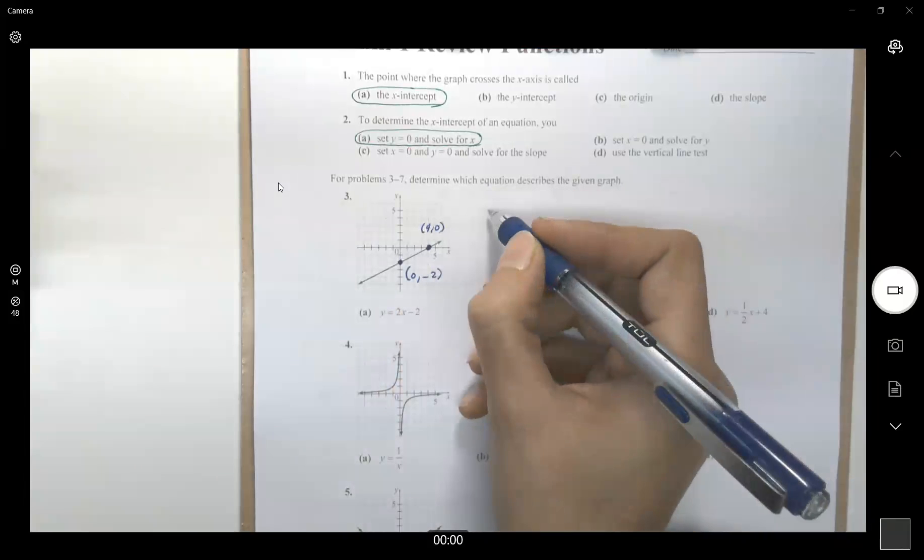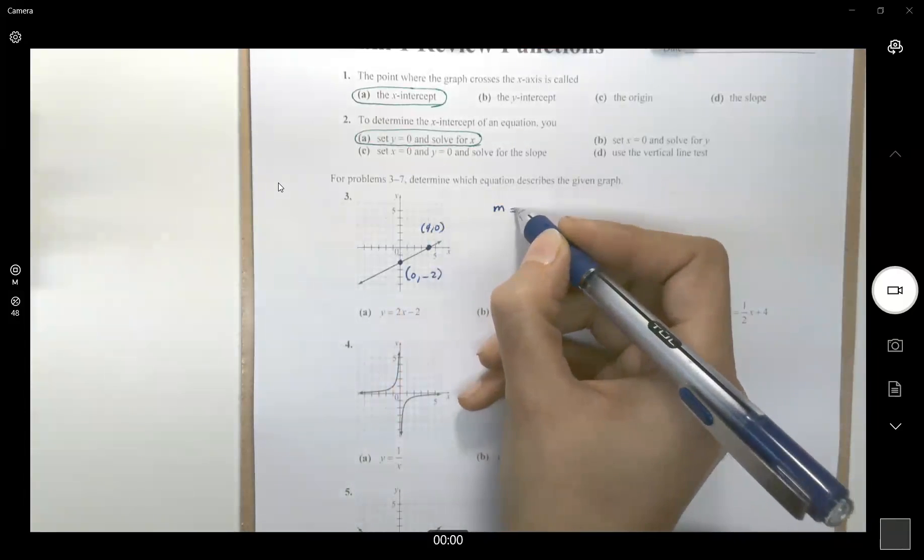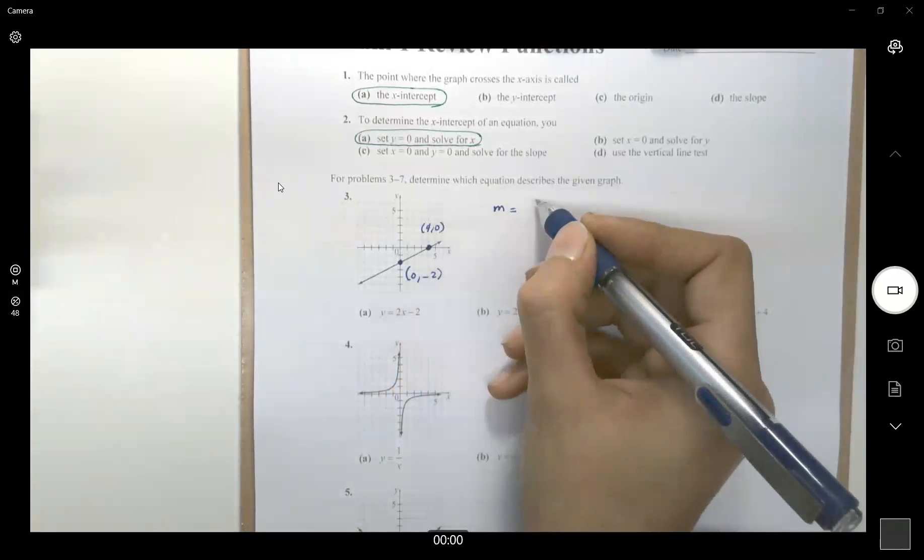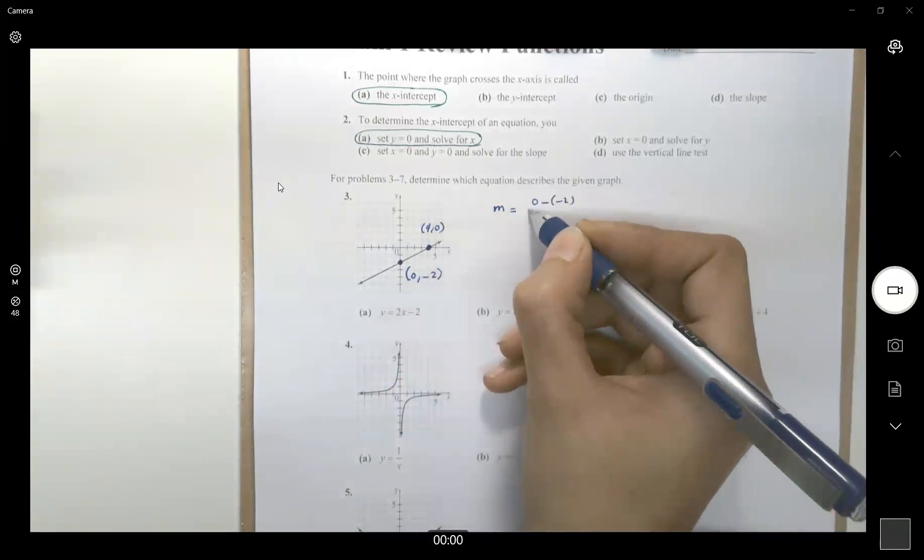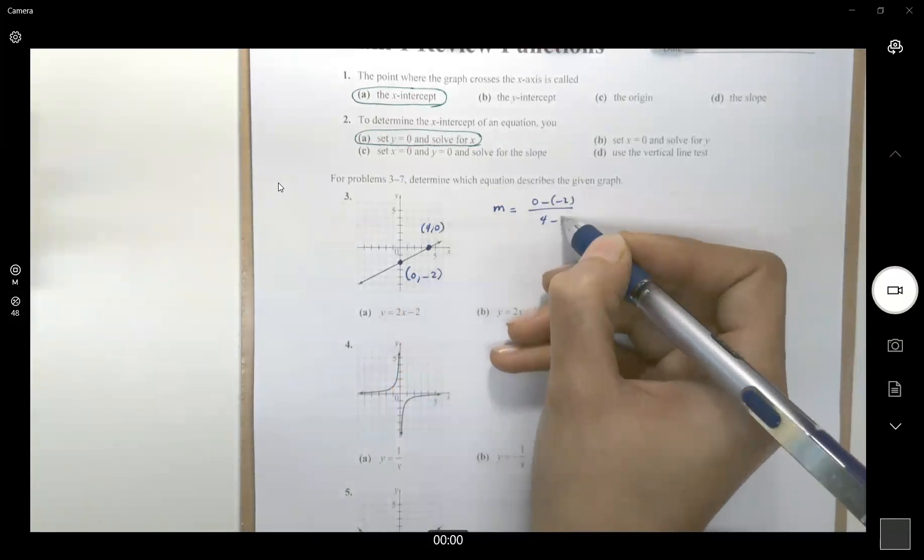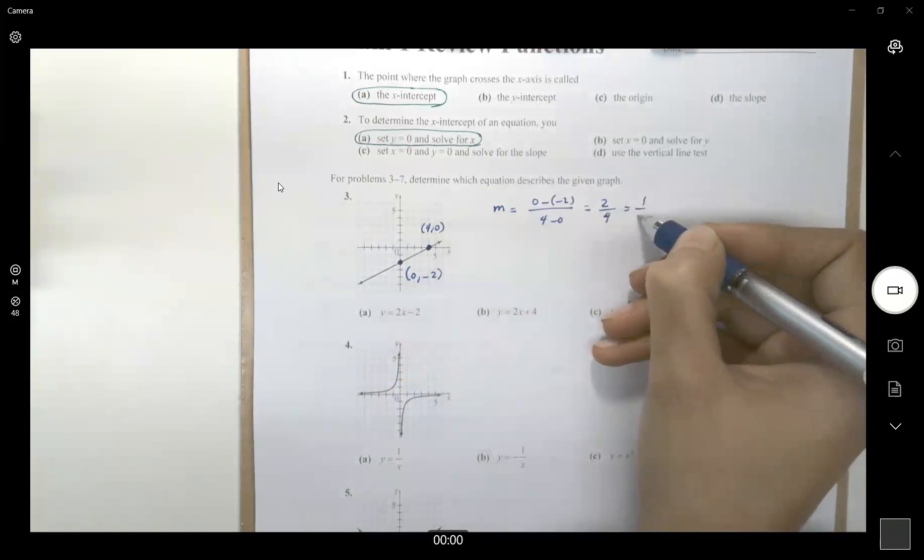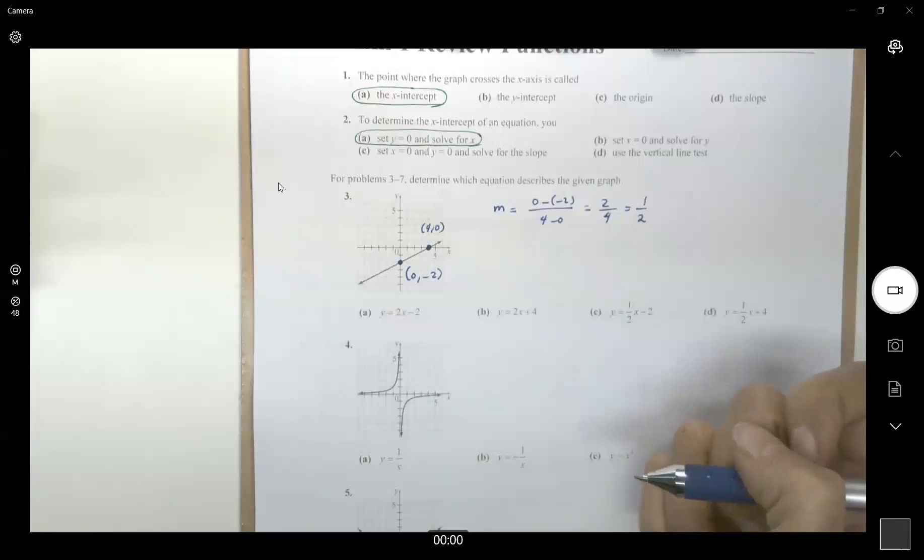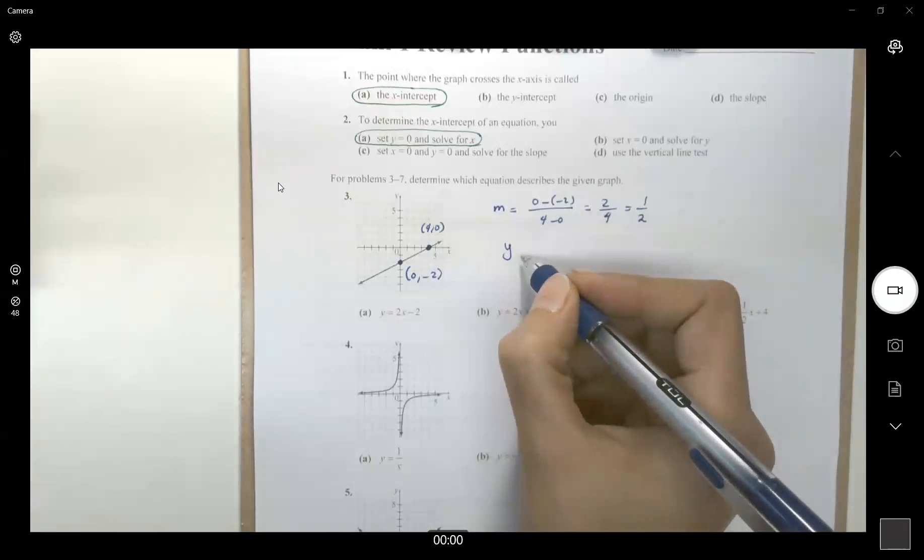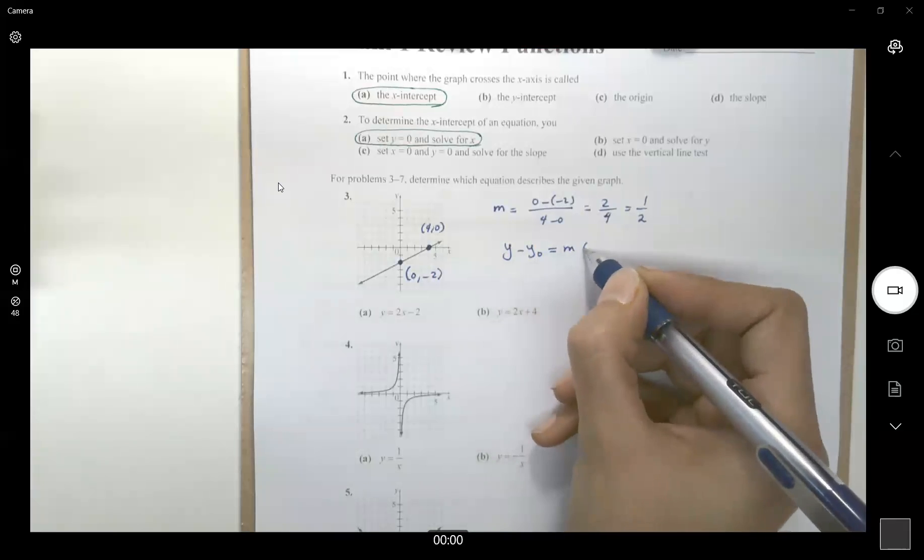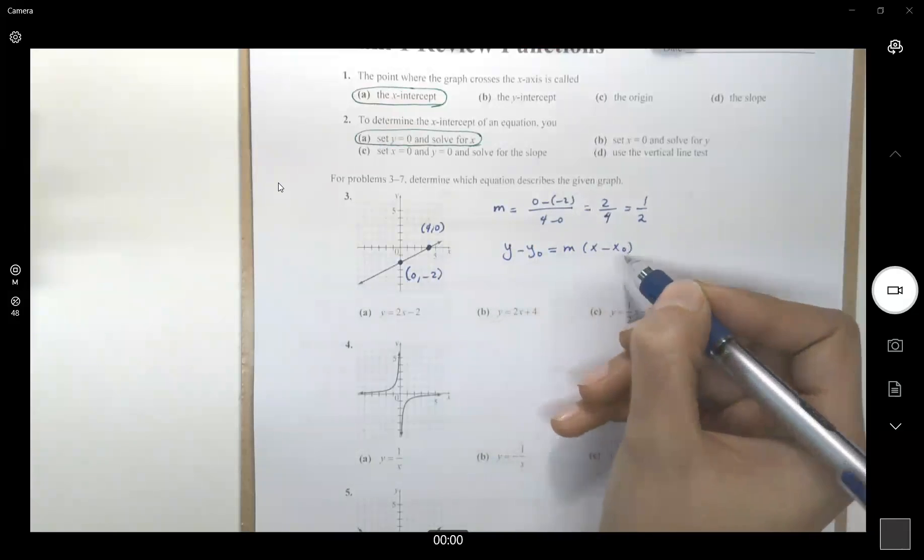There we go. So, slope m is equal to 0 minus minus 2 divided by 4 minus 0, or 2 over 4, and a half. So, this is the slope. y minus y sub 0 equals to m x minus x sub 0.